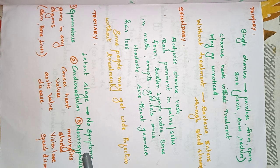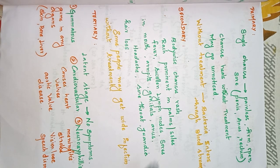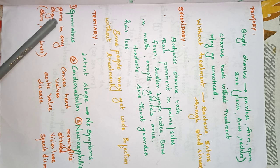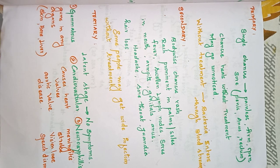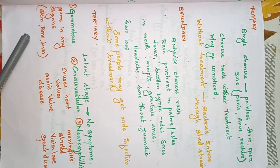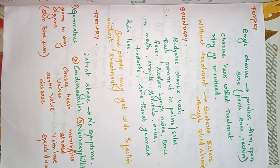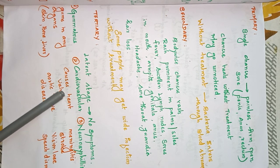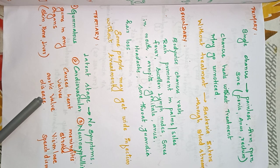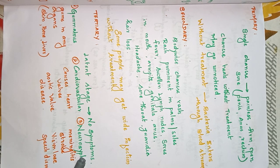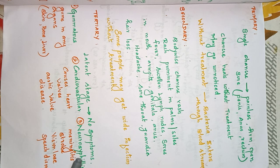In the tertiary stage, there are three manifestations: gummatous syphilis, cardiovascular syphilis, and neurosyphilis. Gummatous syphilis involves gumma formation with pain or destruction in organs — mainly skin, bone, and liver. Cardiovascular syphilis mainly affects heart valves, causing aortic valve disease. Neurosyphilis presents with meningitis, stroke, vision loss, and speech disorder.